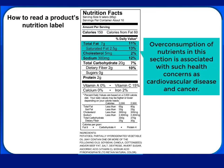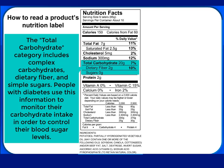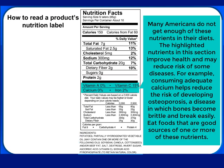Overconsumption of nutrients in this section is associated with health concerns such as cardiovascular disease and cancer. The Total Carbohydrate category includes complex carbohydrates, dietary fiber, and simple sugars. People with diabetes use this information to monitor their carbohydrate intake in order to control their blood sugar levels. Many Americans do not get enough of these nutrients in their diets. The highlighted nutrients in this section improve health and may reduce risk of some diseases. For example, consuming adequate calcium helps reduce the risk of developing osteoporosis, a disease in which bones become brittle and break easily. Eat foods that are good sources of one or more of these nutrients.